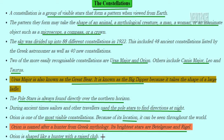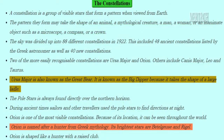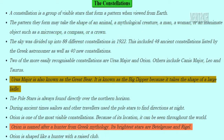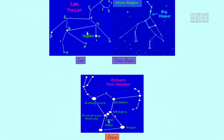Moving on to Orion — Orion is also the most visible constellation. Because of its location, it can be seen from all around the world. Orion is named after a hunter belonging to Greek mythology. The brightest stars of the Orion constellation are Betelgeuse and Rigel.